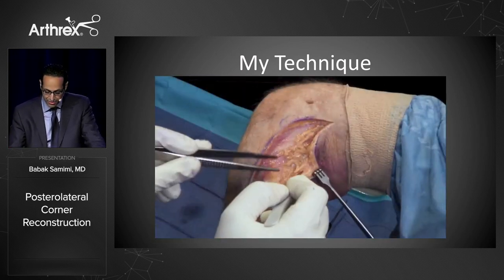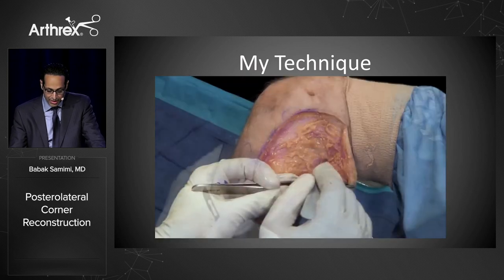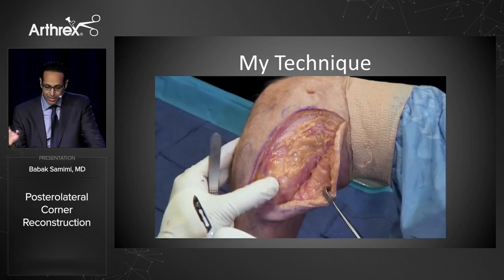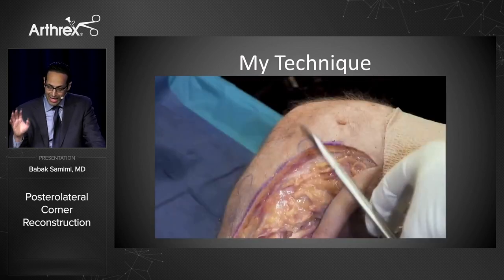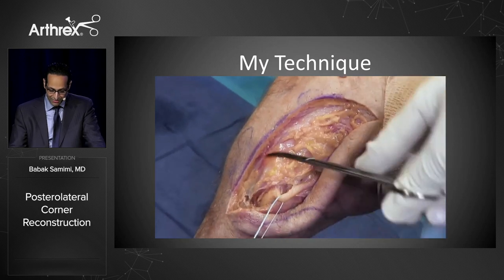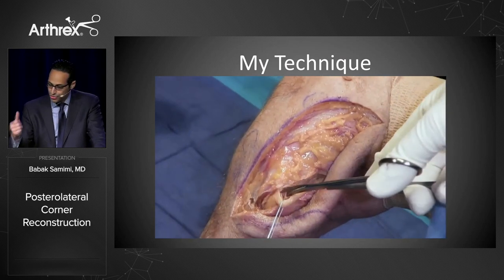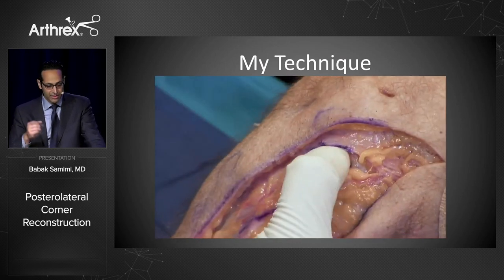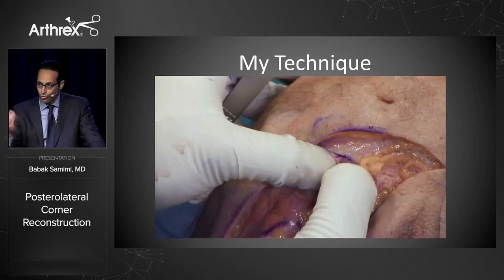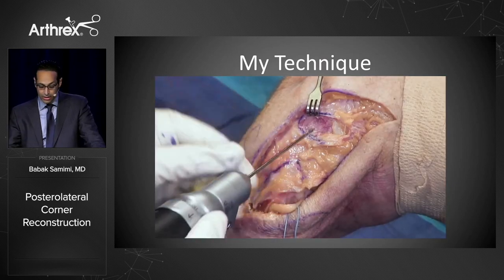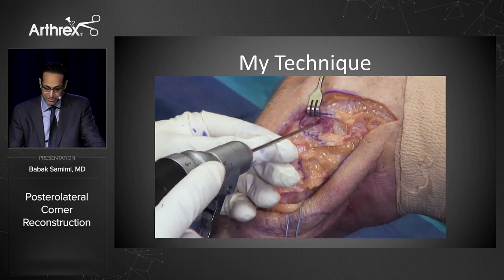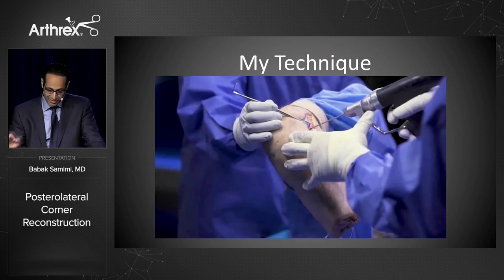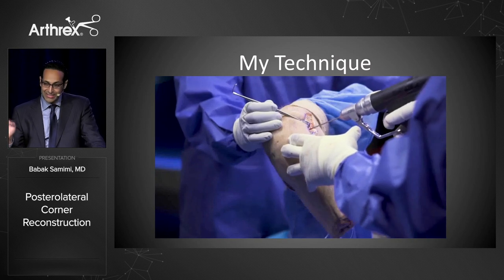You'll need a long pre-looped structured graft link (commercially available), an ABS tightrope, and swivel locks — both standard and fork-tip swivel locks. You must find and protect the peroneal nerve. You cannot ignore it. Just run your finger over the fibular neck and you'll feel it right there. Dissect it down, or find it along the posterior aspect of the biceps femoris — either way, you must get it and protect it.